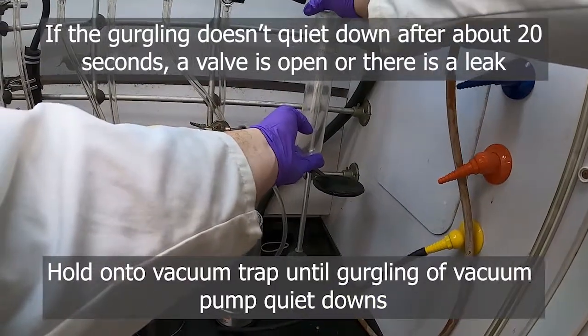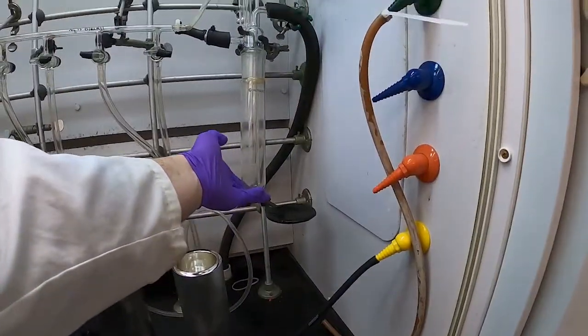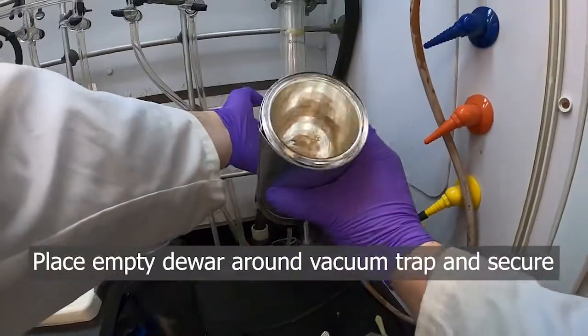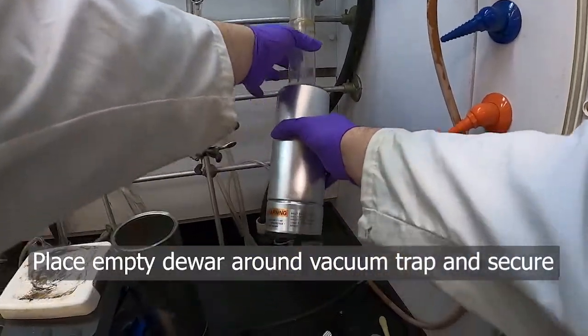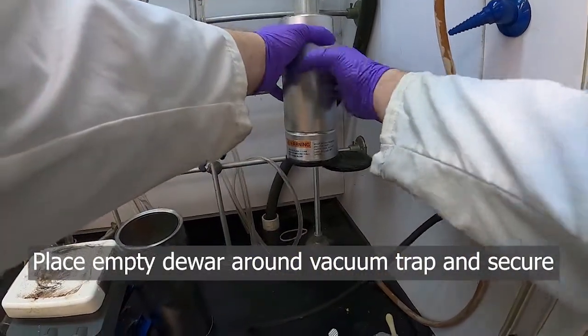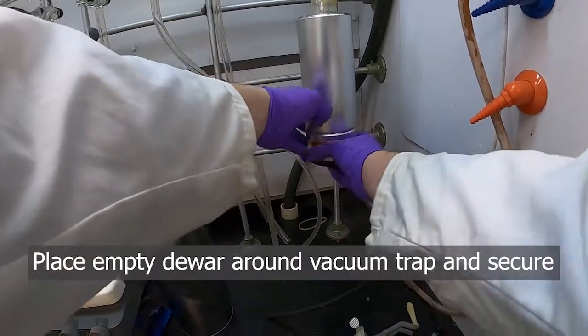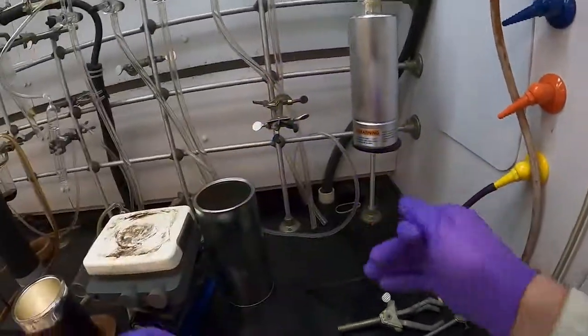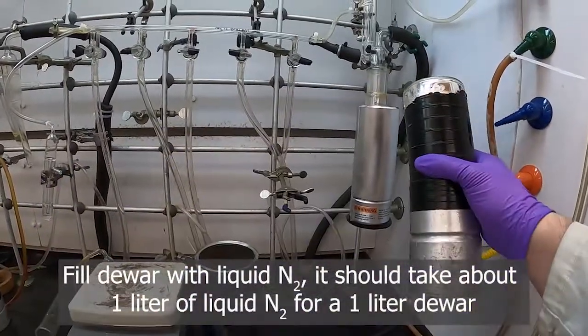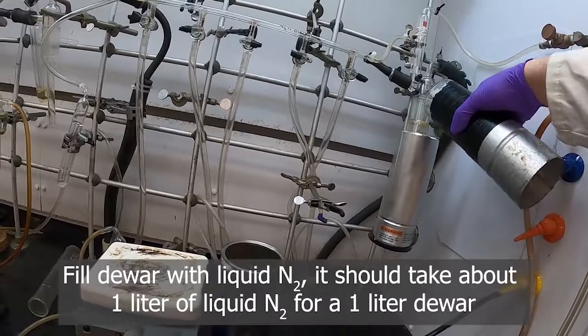Until I kind of hear a change in the sound of the pump - I think we're there. We'll take our empty dewar, put it around our trap, and bring something in place to hold up the dewar. And then we can fill this dewar with nitrogen.